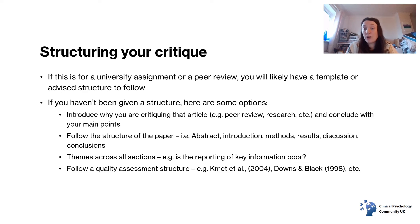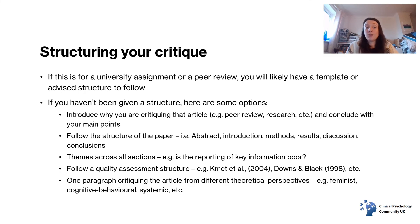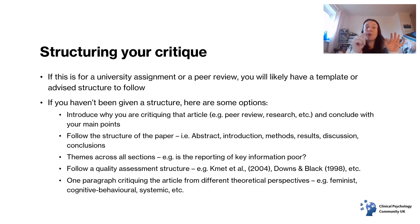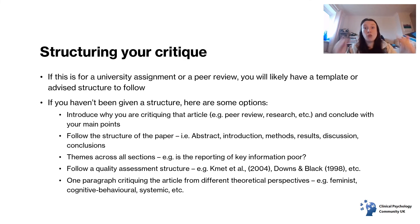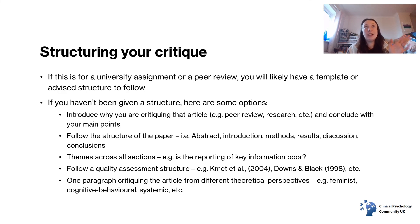You could also follow a quality assessment structure, or have a paragraph critiquing the article from different theoretical perspectives — such as a feminist or systemic perspective — which is more suited to a university assignment than a peer review. When structuring your critique, it's really important to have done those early stages of thoroughly reading the article so you know exactly what it's trying to do. If you don't know what the article is trying to do, read it again. If you've read it so much you could practically recite it and you're still not sure, then it's probably the article that isn't clear.